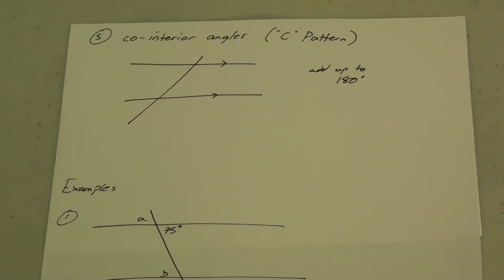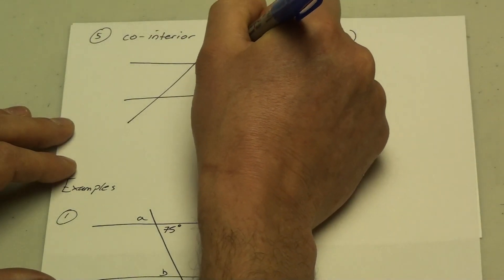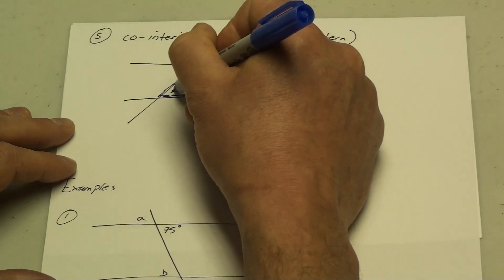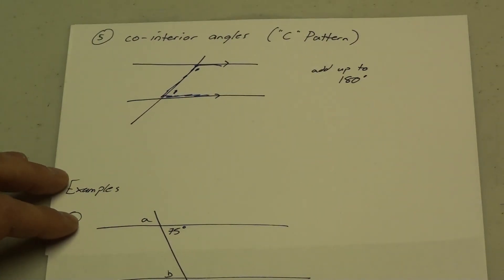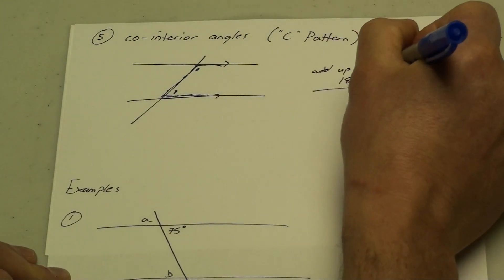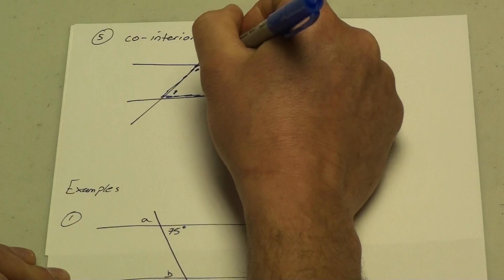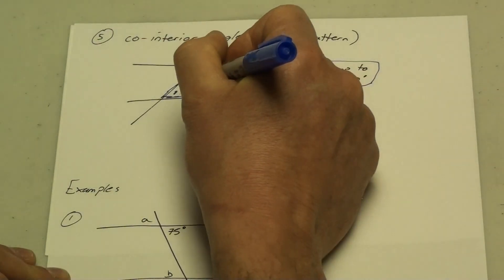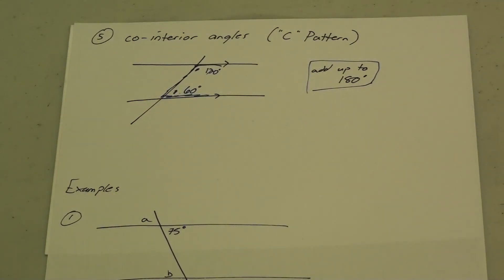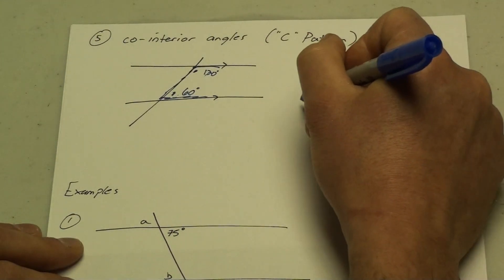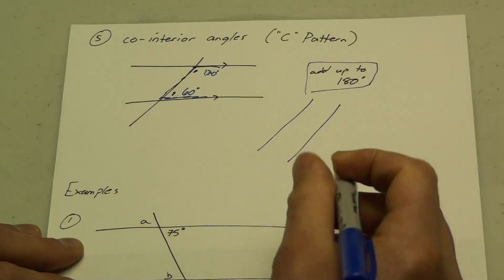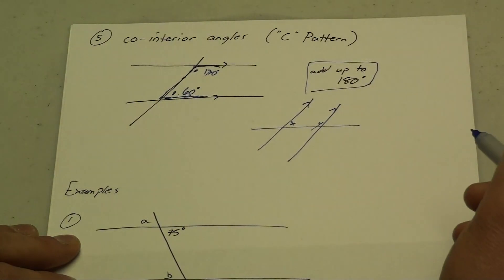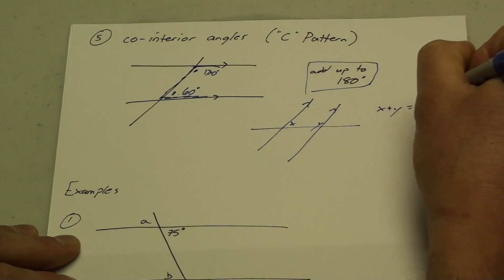You can also have co-interior angles, formed by the C pattern. Here I'd have my letter C between my parallel lines, and the co-interior angles are the two angles inside your parallel lines — they're going to add up to 180 degrees. So if one angle is 120 degrees, the two angles must add up to 180 degrees, and therefore the other angle is 60 degrees. Your C could go a variety of different ways — maybe my parallel lines are going up and down with the intersection going sideways. In that case, X and Y are my two co-interior angles, and X plus Y is going to add up to 180 degrees.